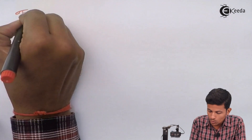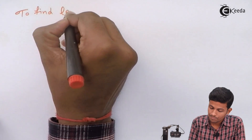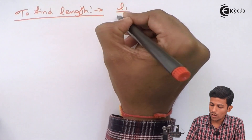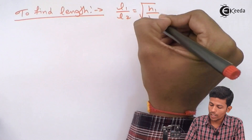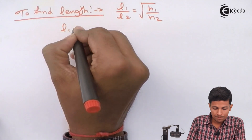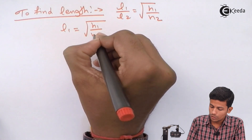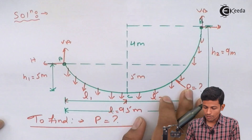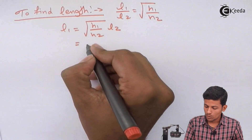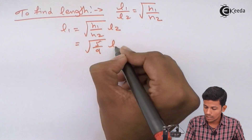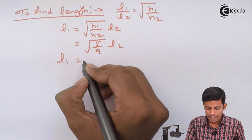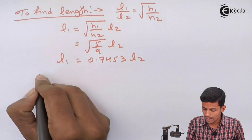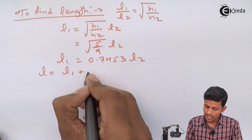To find the lengths, we use the formula: L1/L2 = √(H1/H2). So L1 = √(H1/H2) × L2 = √(5/9) × L2. Solving this gives L1 = 0.7453 × L2. Also, L = L1 + L2.